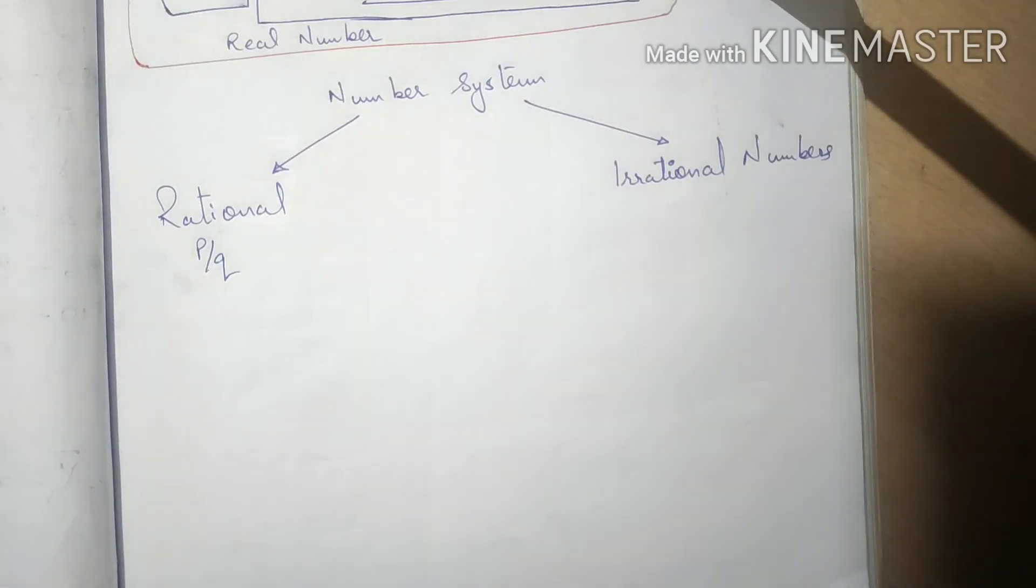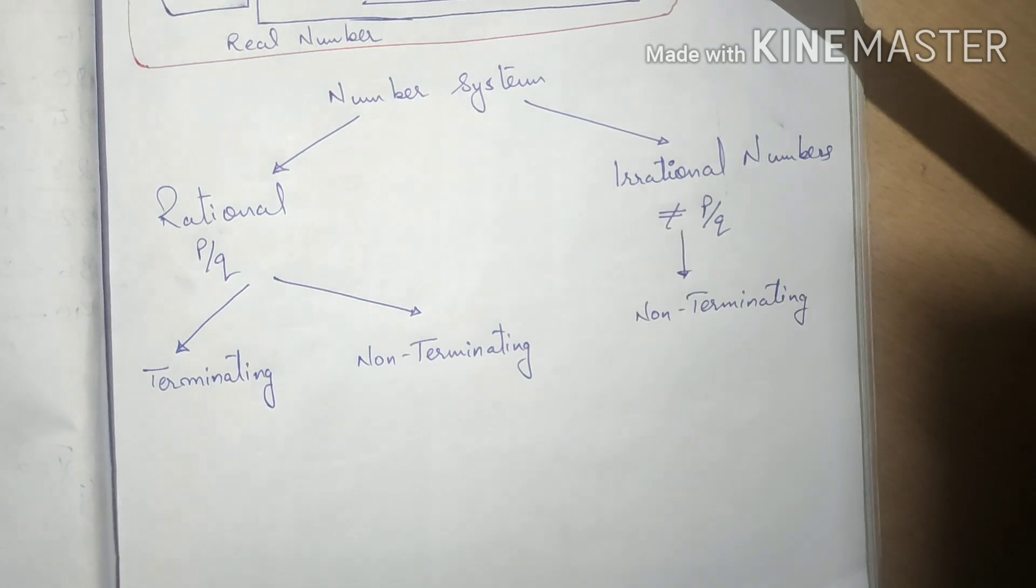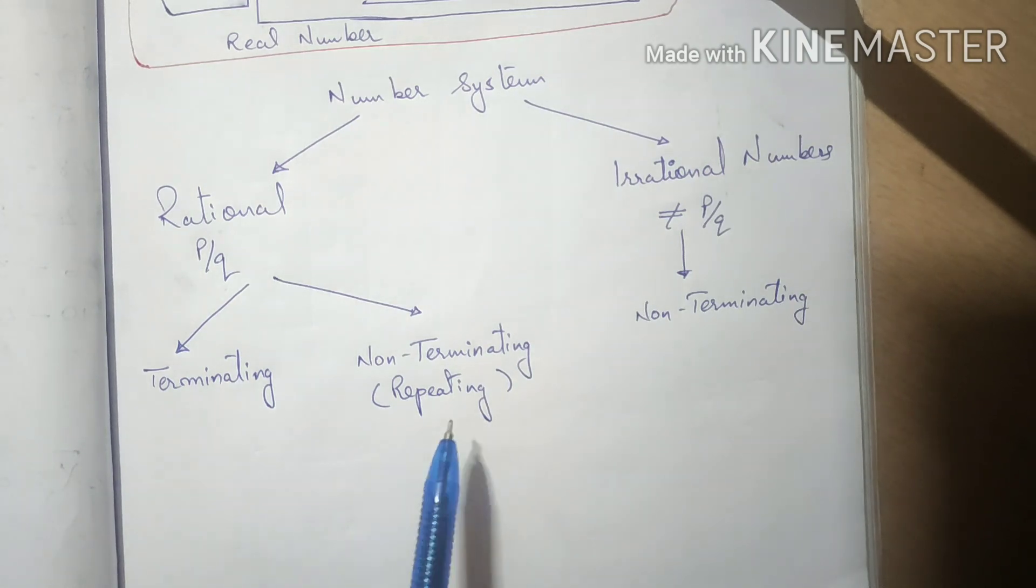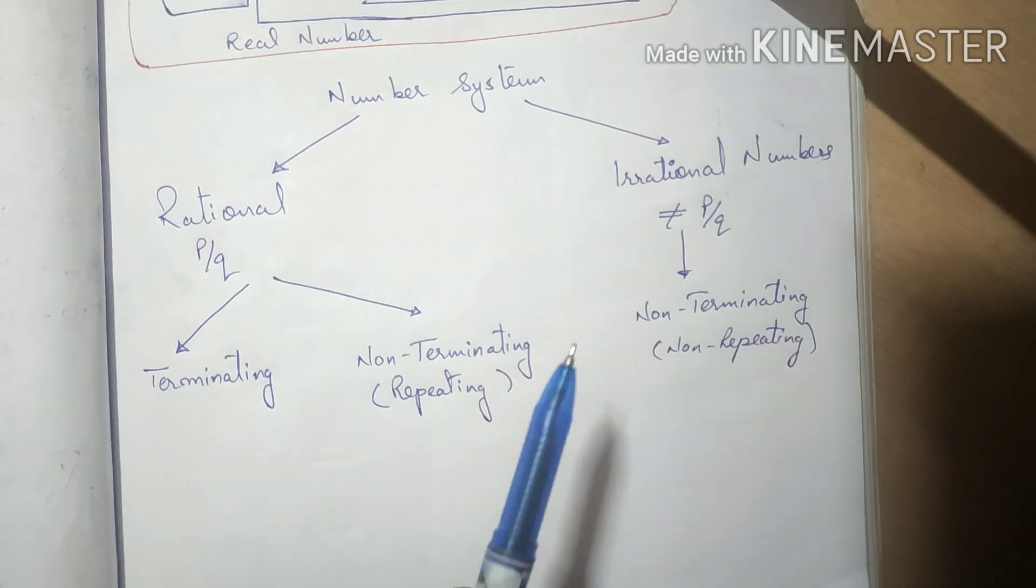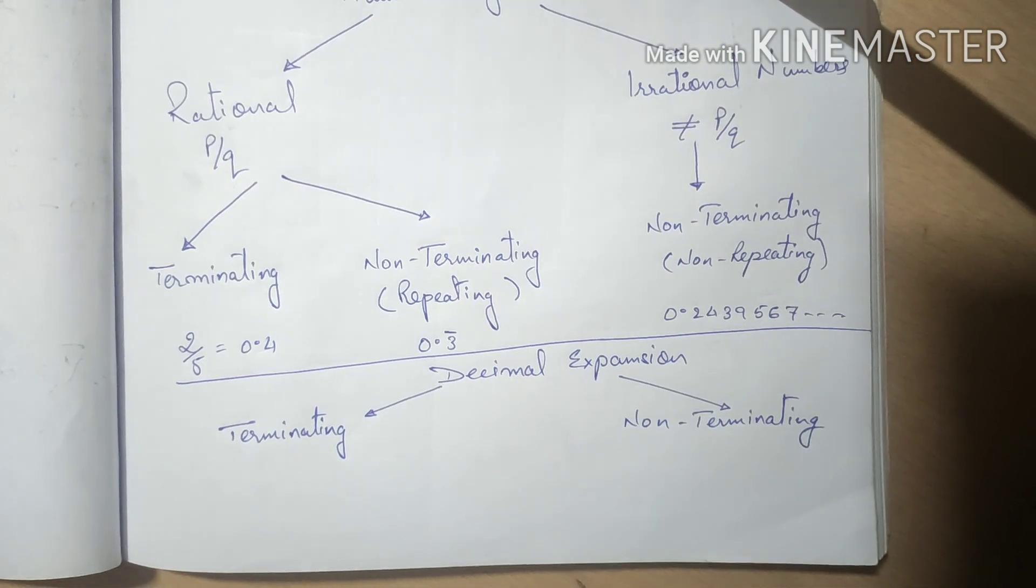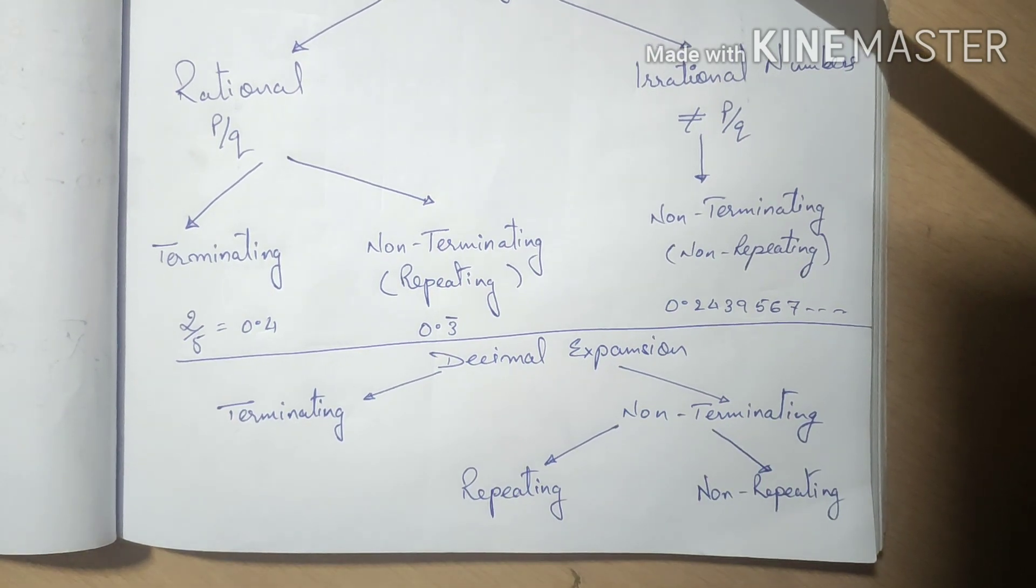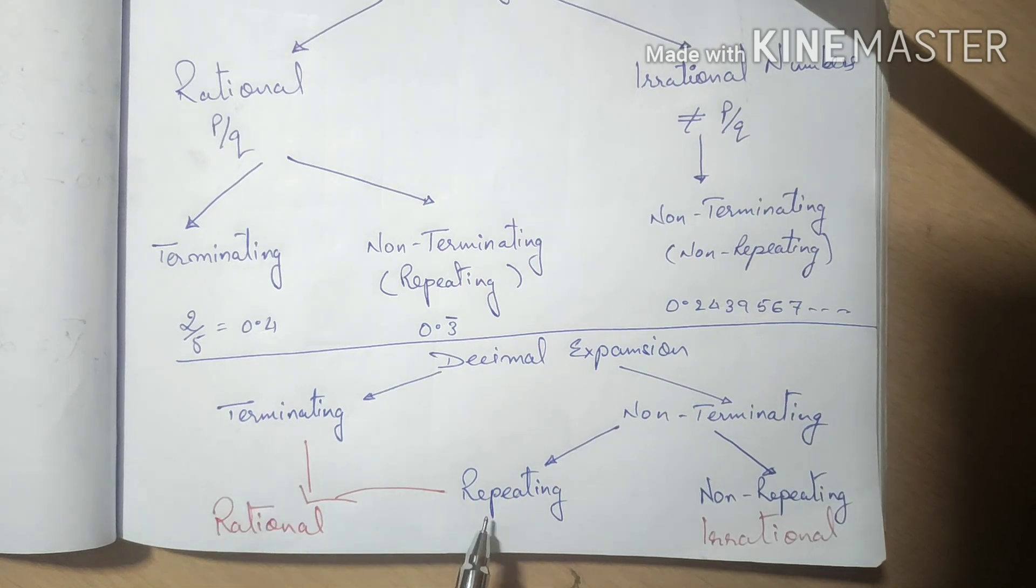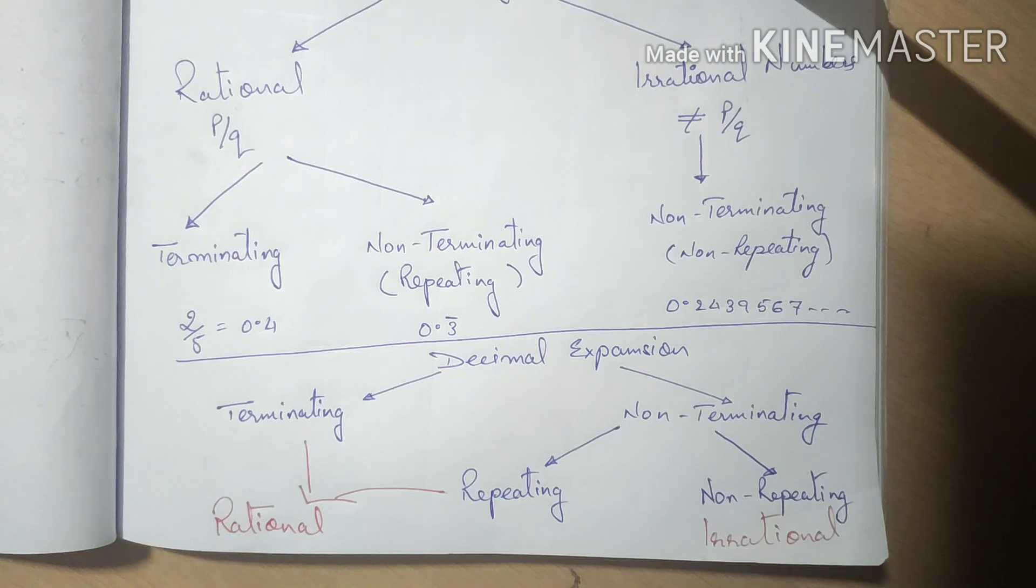Rational means P by Q form, and irrational cannot be written in the form of P by Q. We have two kinds of decimal expansion for rational numbers: terminating and non-terminating. Irrational numbers are always non-terminating. If the rational number is non-terminating, then it will be repeating or recurring. If irrational, then it will be non-terminating, non-repeating. Another representation is where terminating and non-terminating repeating are rational, and non-terminating non-repeating are irrational. Always remember this.